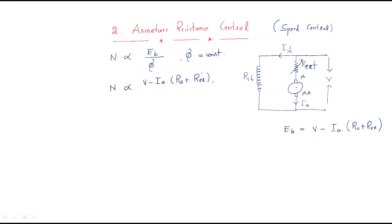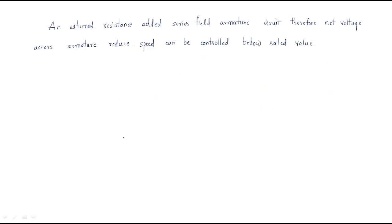If you increase this external resistance, then the total term (V minus Ia × (Ra + R_ext)) decreases, and whenever that term decreases, the speed decreases. So by increasing the external resistance, the speed decreases. The external resistance is added in series with the armature circuit, therefore the net voltage across the armature reduces and speed can be controlled below rated value.